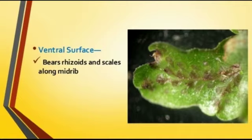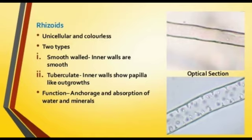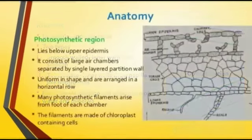This is the anatomical portion — the cross section. We can find two regions: the photosynthetic region and the storage region. The photosynthetic region lies below the epidermis. It consists of large air chambers separated by a single-layer partition wall, uniform in shape arranged in horizontal rows. Many photosynthetic filaments arise from the floor of each chamber. Each filament is made up of chlorophyllous cells.